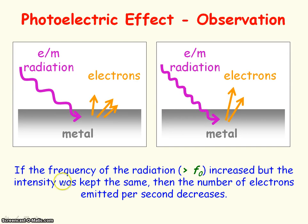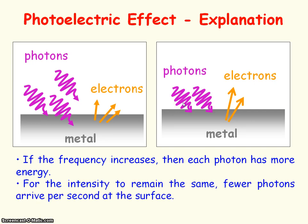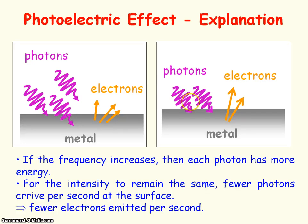But if the intensity was kept the same and the frequency of the radiation was increased, then the number of electrons emitted per second would decrease. That's because as frequency increases, each photon has more energy, and for intensity to remain the same — since intensity relates to energy arriving per second — fewer photons arrive per second at the surface, so there are fewer electrons emitted per second.